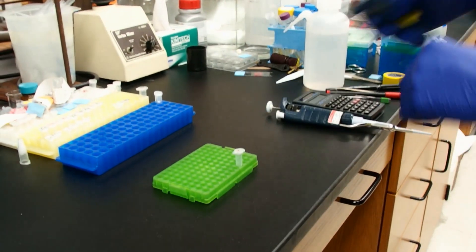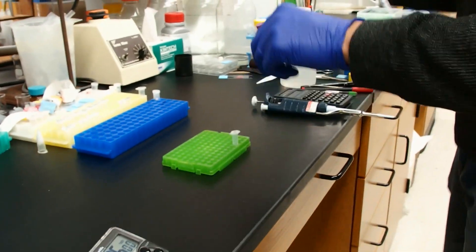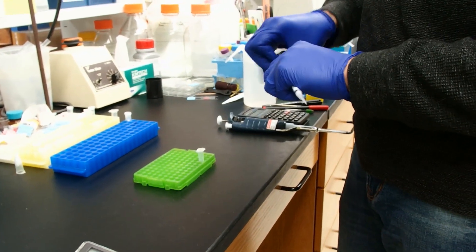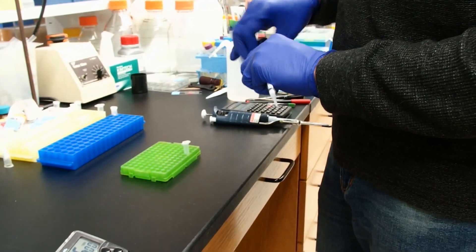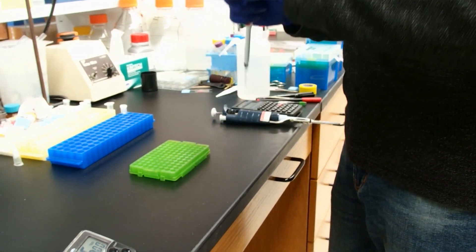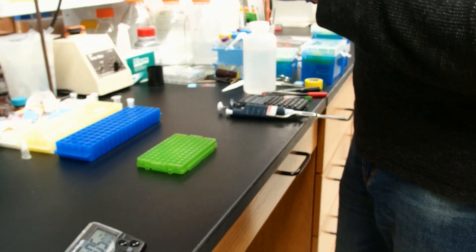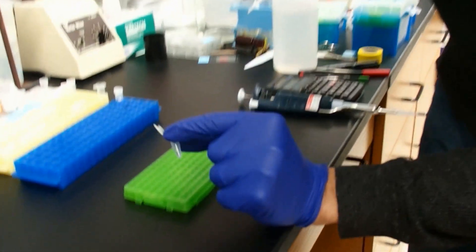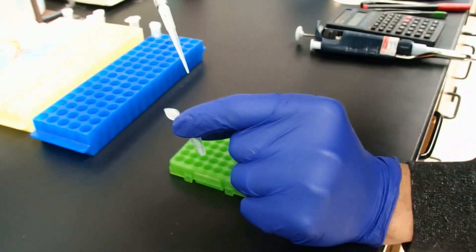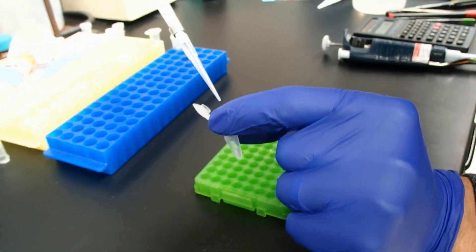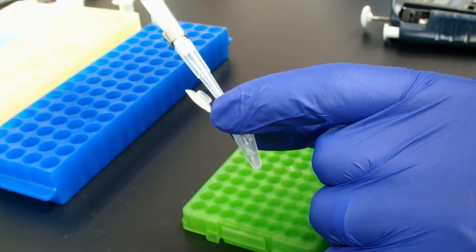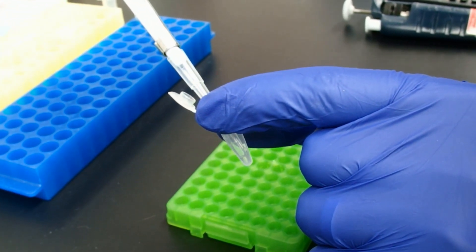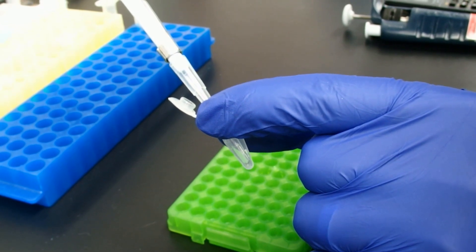I'm going to carefully pipette away the supernatant. I'm holding the pellet so it's down. The pellet is going to be down, and I'm going to come in and I'm going to pipette from the opposite side of the wall, opposite side of the hinge, and slowly pipette down.